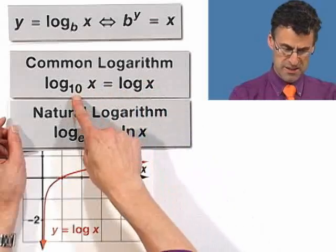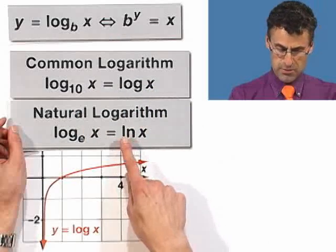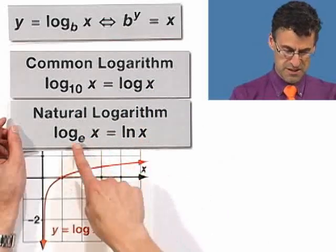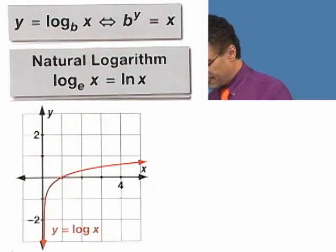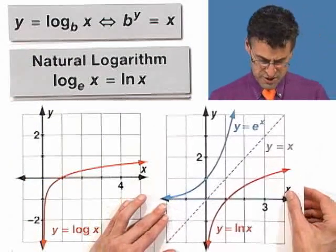If there's log with nothing there, that means base 10. If it's ln or natural log x, that means base e. And if you look at the graph of that function, again, it's the inverse function of the exponential.